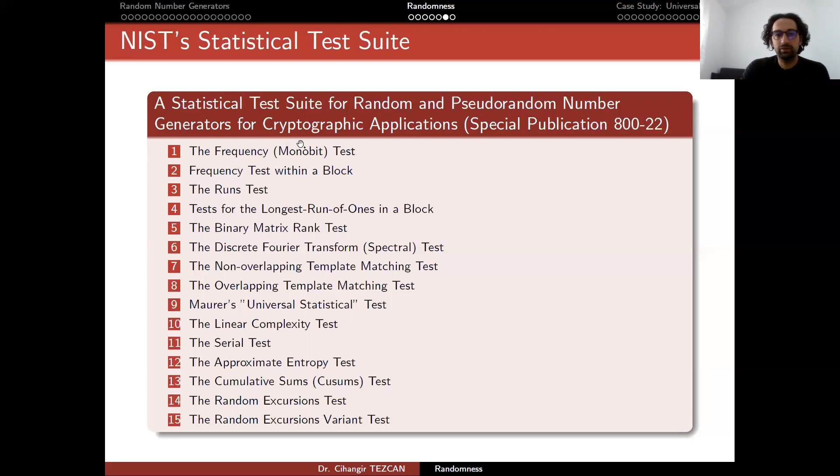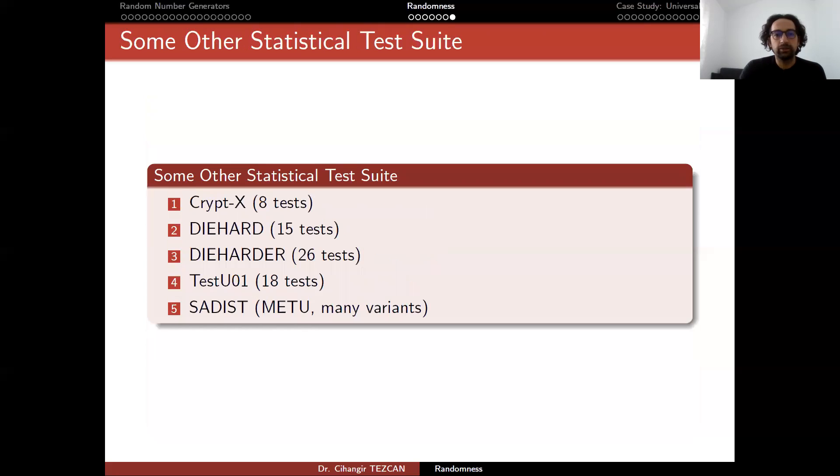So if your sequence fails some of these tests, then you will be suspicious. But if it passes all of them most of the time, then you will say that your random number generator kind of acts in a good way.